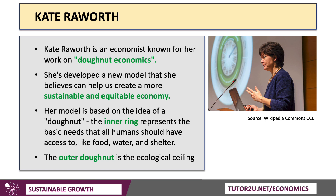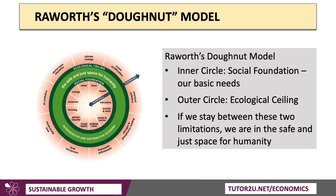Kate Raworth's model is based on the idea of a donut. The inner ring represents the basic needs that all humans should have access to — food, water, and shelter. The outer donut is the ecological ceiling. The inner circle is the social foundation: the need to meet our basic needs, including education, income and work, housing, energy, water, food, and equity and equality. The outer circle is the ecological ceiling, and if we stay between those two limitations, we are in the safe and just space for humanity.